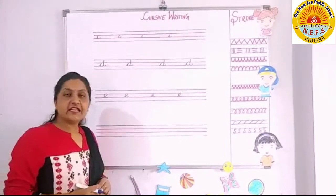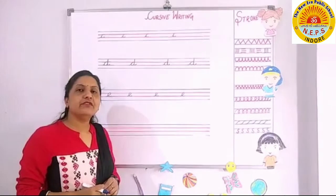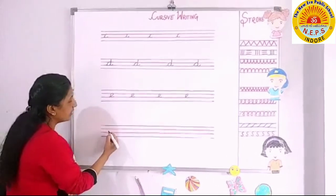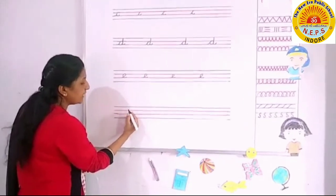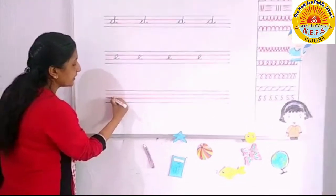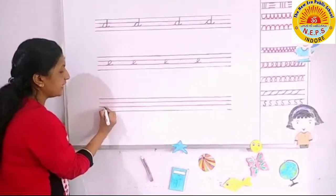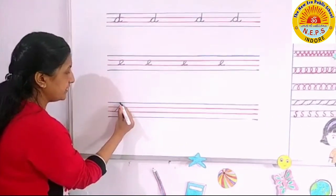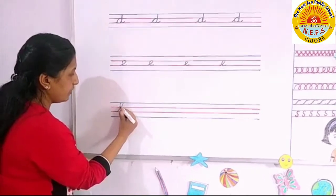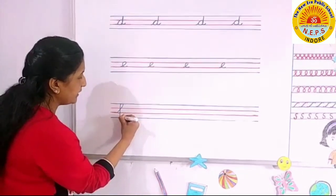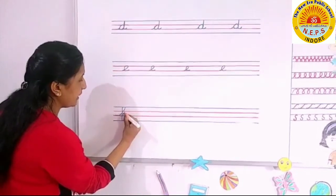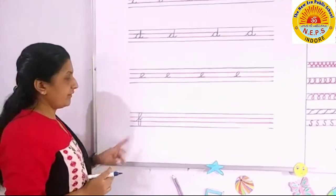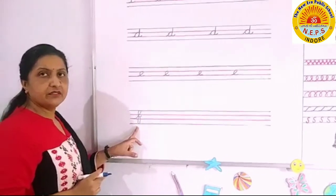Our next letter is F — F, fish. We will start with the lower midi line, third line. Go upwards, then downwards like this. Make a curve, make a tail. F — F, fish.